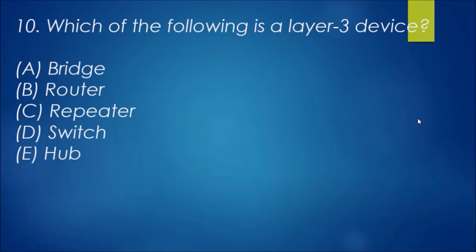I've just given away the answer for this one. Which of the following is a layer three device? If you were just listening, I literally said the router is a layer three device. A bridge is within a switch, the repeater is not involved, a hub is a very dumb switch, so the answer will be B, router.